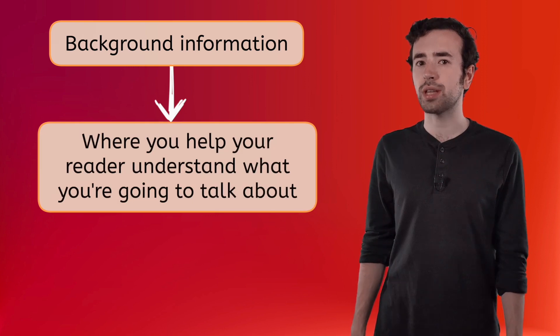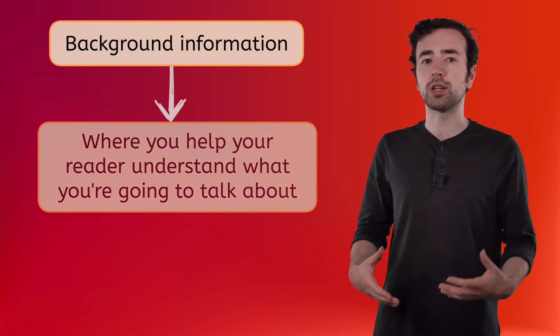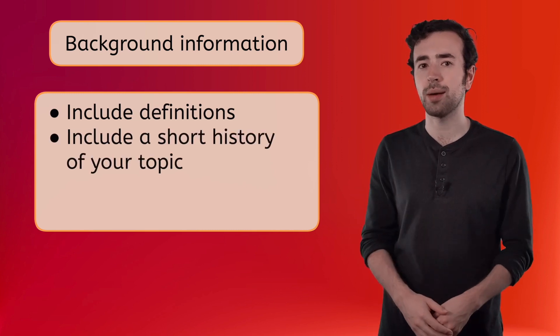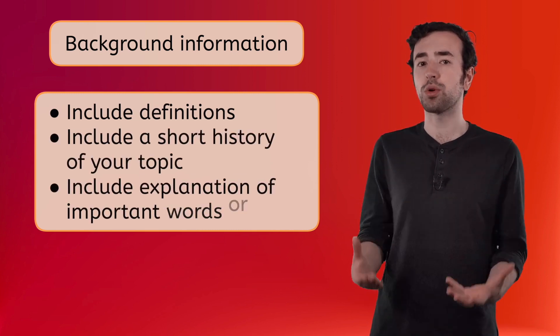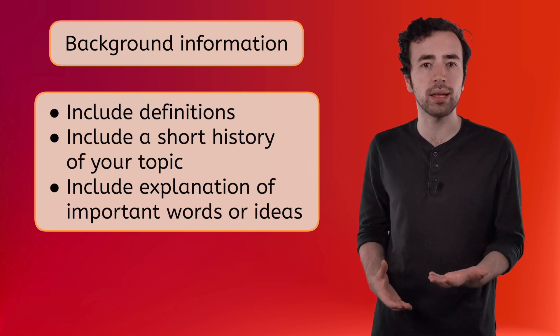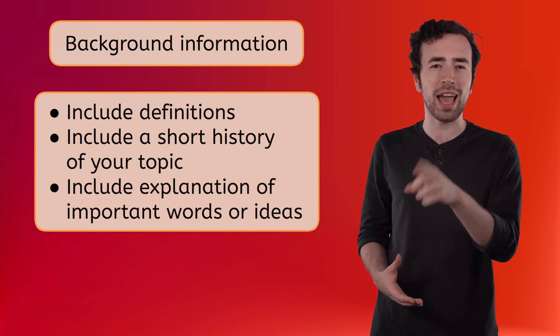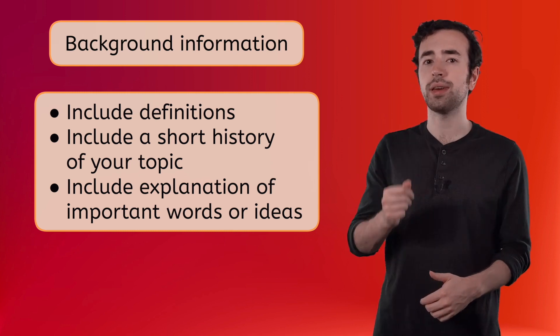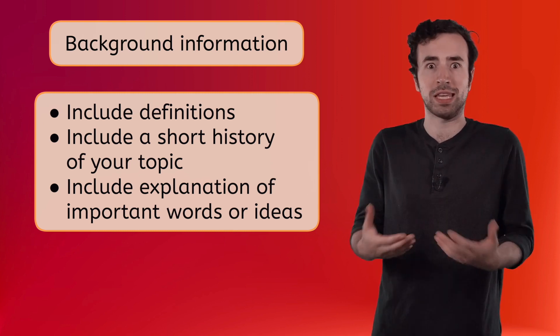An effective hook is exciting to the reader, so if it sounds exciting to you, you're on the right track. Now that we have our reader's attention, we need to give them some background information. This is where you help your reader understand what you're going to talk about. You can include things like definitions of tricky words or a short history of your topic. You might want to explain some important words or ideas that relate to your main idea, but make sure that you don't give away everything you want to say just yet.